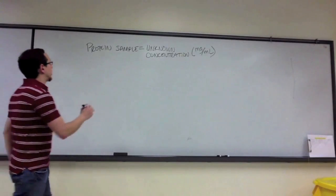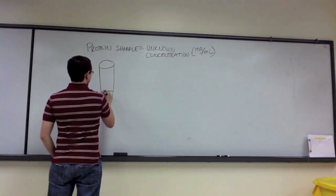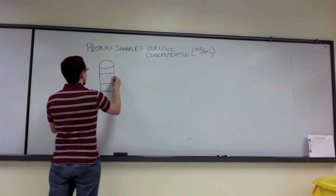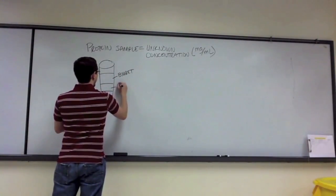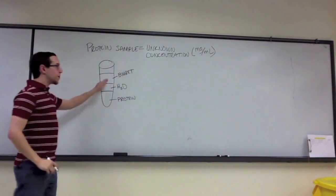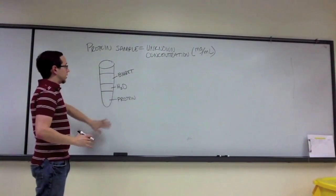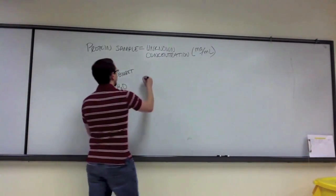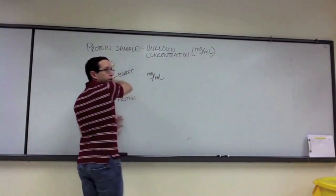What can we do with this protein sample? We've got it in a test tube, and what you did was add biuret to it. So currently this test tube has three things in it: biuret, water, and protein. Remember, they're not separated like this in the solution — they're all mixed together. I simply divided it so you could see these three components.